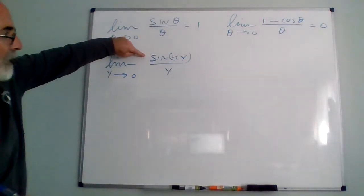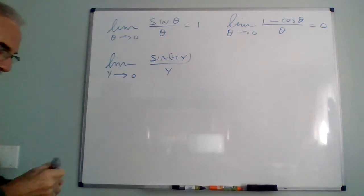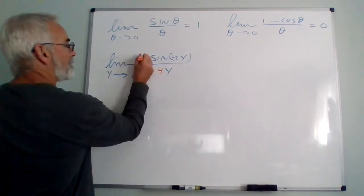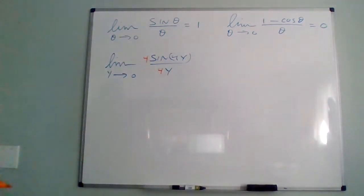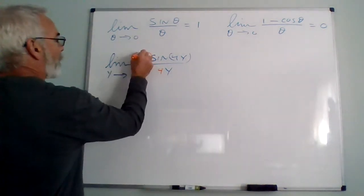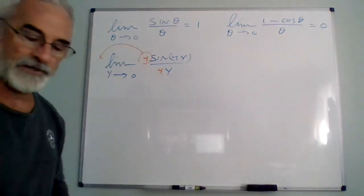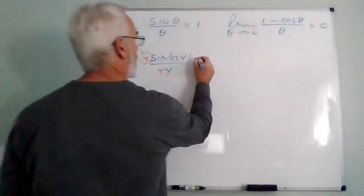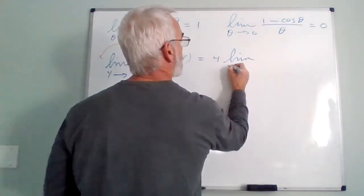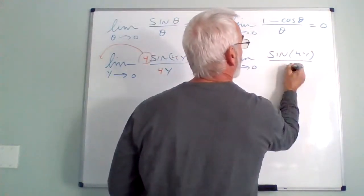We could try to do a trig expansion of sine of 4y, but that would be very complicated. A much easier way is to multiply numerator and denominator by four — all we're doing is multiplying by one — and then take this four completely outside the limit, because the limit of a scalar times a function is the scalar times the limit. So this is four times the limit as y goes to zero of sine of 4y over 4y.